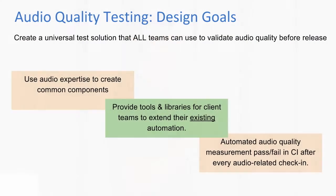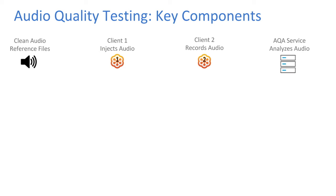Restating our design goals: in green are the product teams with their automation working on functional tests, and in orange is our desire to separate out what requires expertise, build it into common components, and deliver it. It's one universal test solution that all teams can use.